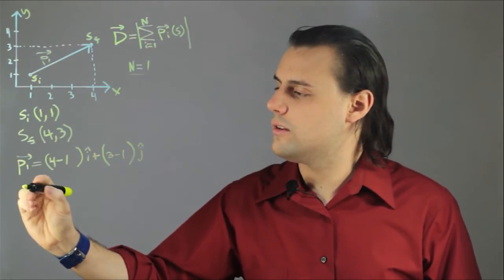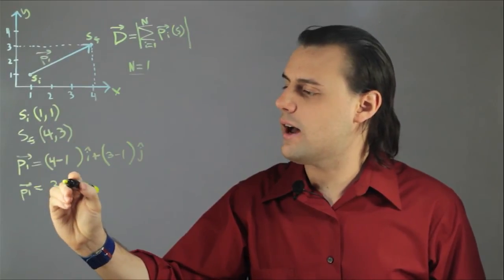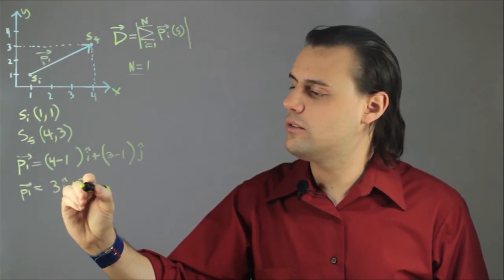So the displacement vector p1 is equal to 3i plus 2j. This is the displacement vector in terms of its horizontal and vertical components,